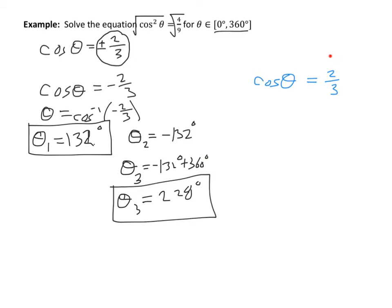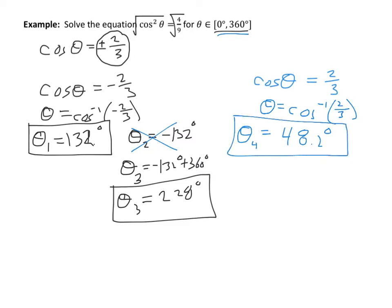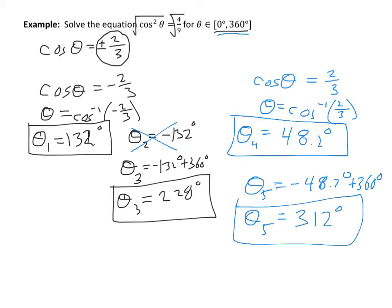Now I'll work out the second equation: cosine θ equals positive 2/3. Taking the inverse cosine gives a primary solution of about 48.2 degrees, which is on the interval. The secondary solution is the negative of that, negative 48.2 degrees, which is not on the interval, so I add 360 degrees to get 312 degrees. That gives four total solutions: 132°, 228°, 48.2°, and 312°.